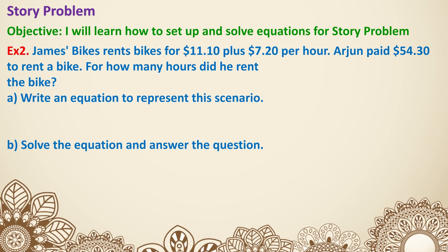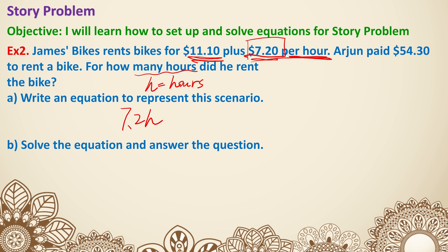Now let's move on to story problems. James Bikes rents bikes for $11.10 plus $7.20 per hour. Arjun paid $54.30 to rent a bike. For how many hours did he rent the bike? Let h represent hours. Since it's $7.20 per hour, that's 7.2h. The $11.10 is a base fee, so it's 11.10 plus 7.2h equals $54.30.